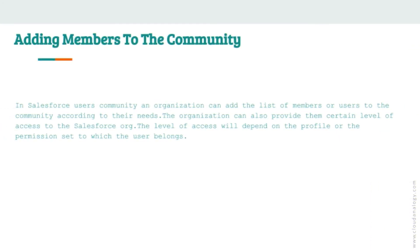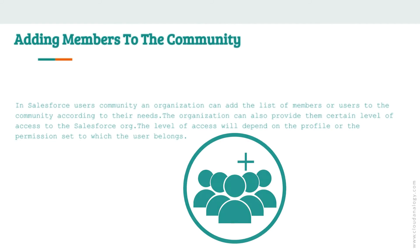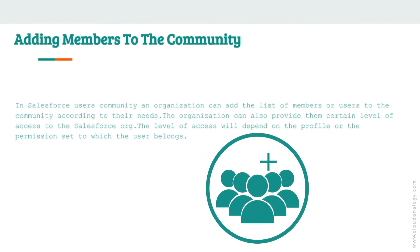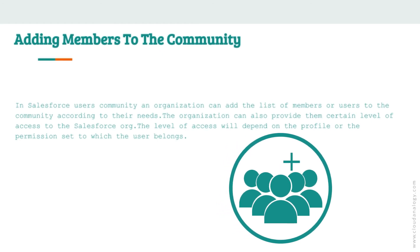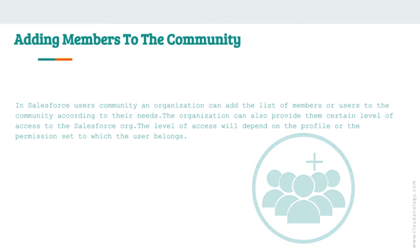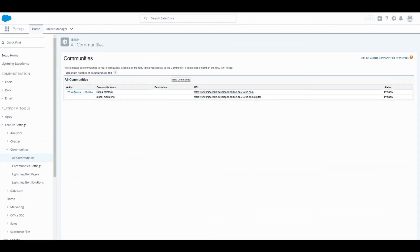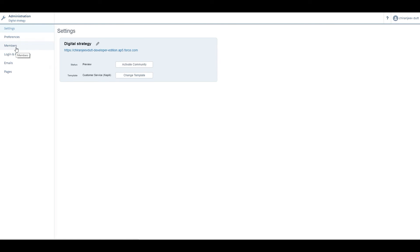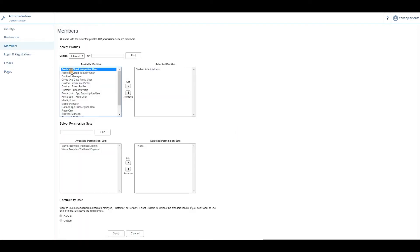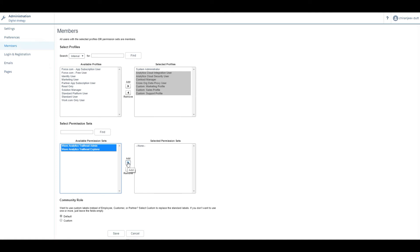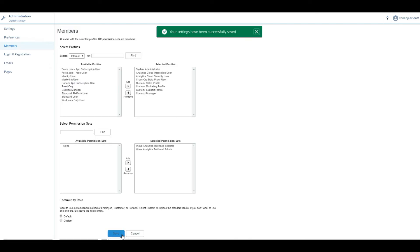Adding members to the community: An organization can add members or users to the community according to their needs and provide them a certain level of access to the Salesforce organization. The level of access depends on the profile or permission set to which the user belongs. Steps: go to Community Management; click on Administration; click on Members; select the desired permission set; click on Add; and finally set the profile permission to give access to your Salesforce user community.